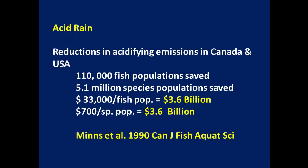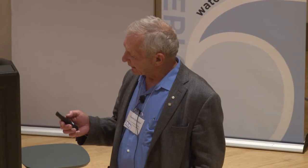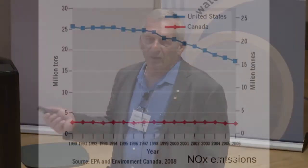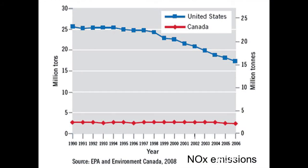Ken Minson and colleagues calculated what those reductions in acidifying emissions meant for species saved and attached dollar figures to it — the economic figures are quite large, even if economics are the only thing you care about. But we still have an acid rain problem, because we've done nothing to control the other source of acidifying emissions: nitrogen oxides.